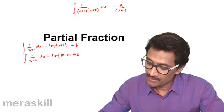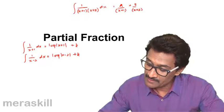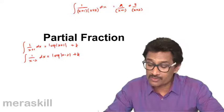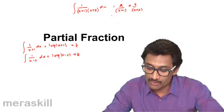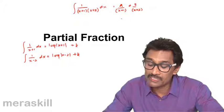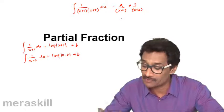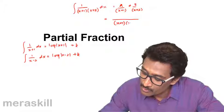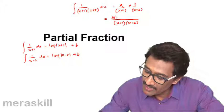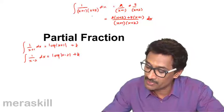We write it as A/(x+1) plus B/(x+2). The degree of the denominator is 2 — there are two brackets in the denominator — so we split it into two fractions. If one factor were raised to the power 2, you would split into three fractions. Taking LCM gives (x+1)(x+2) in the denominator, and the numerator becomes A(x+2) + B(x+1).